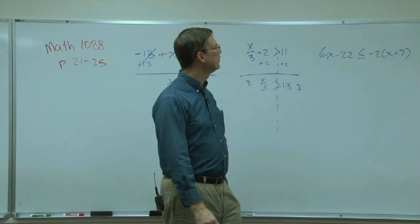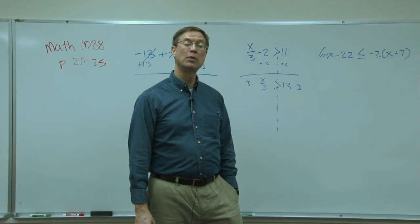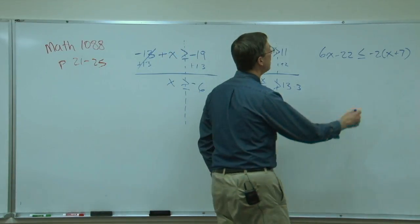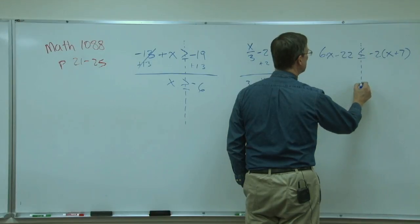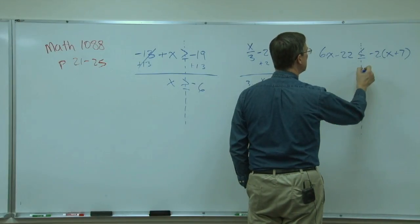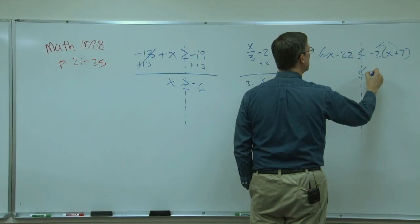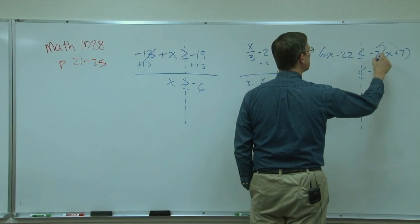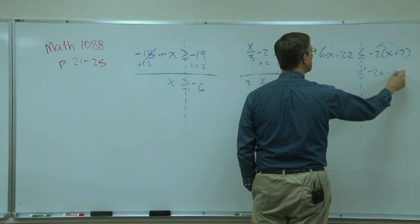Alright, let's walk through the steps here. We have distributive property on the right, so I'm going to separate this to the two halves. Distribute this first, so negative 2x, negative 2 times 7 is negative 14.